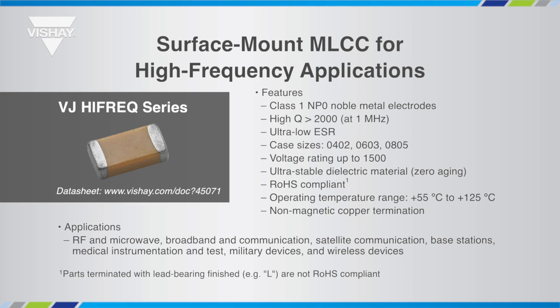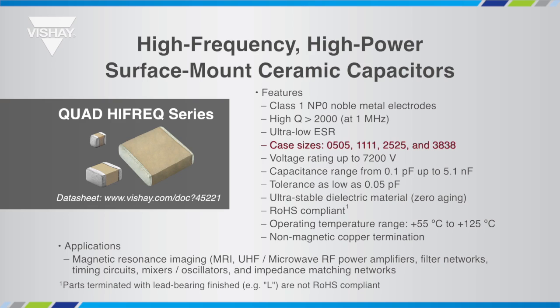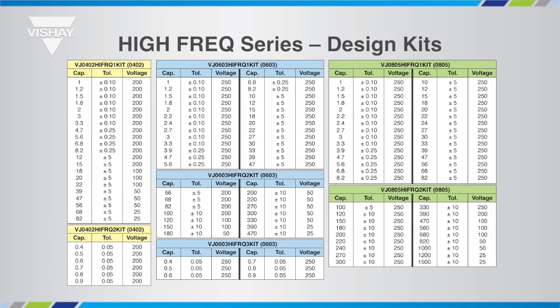When the RF power and/or frequency are higher, the choice is the high frequency series — case sizes in EIA standard 0402, 0603, and 0805 with voltage ratings up to 1500 volts. The Quad High Frequency series offers case sizes 0505, 1111, 2525, and 3838 with voltage ratings up to 7200 volts. Capacitance ranges from 0.1 pF up to 5.1 nF with tolerances as low as 0.05 pF. Vishay offers design kits for 0402, 0603, and 0805 — including a sub-pico kit — as well as for Quad High Frequency series case sizes 0505 and 1111.